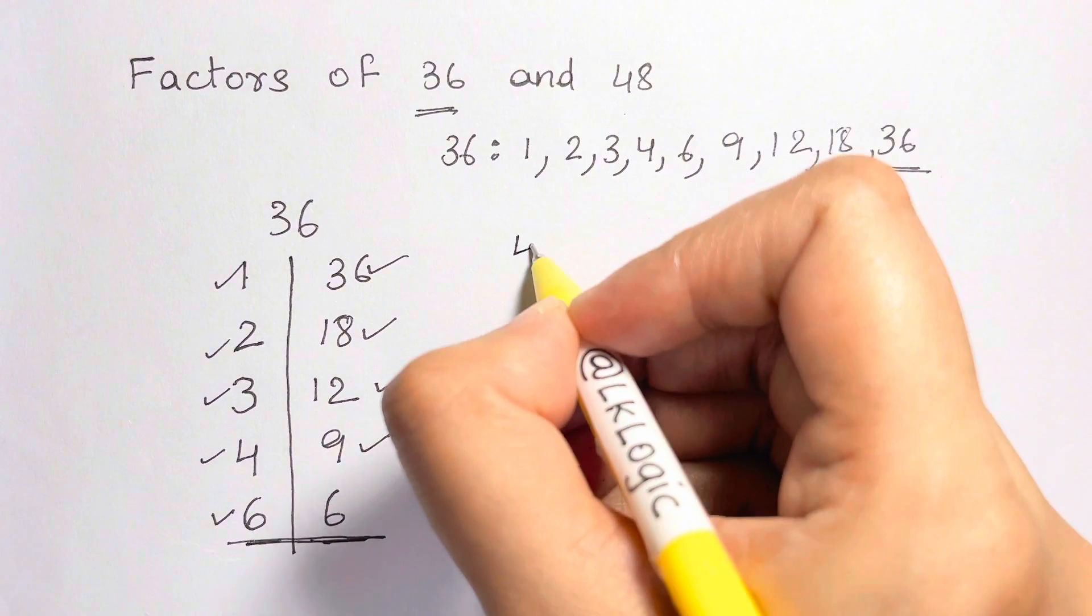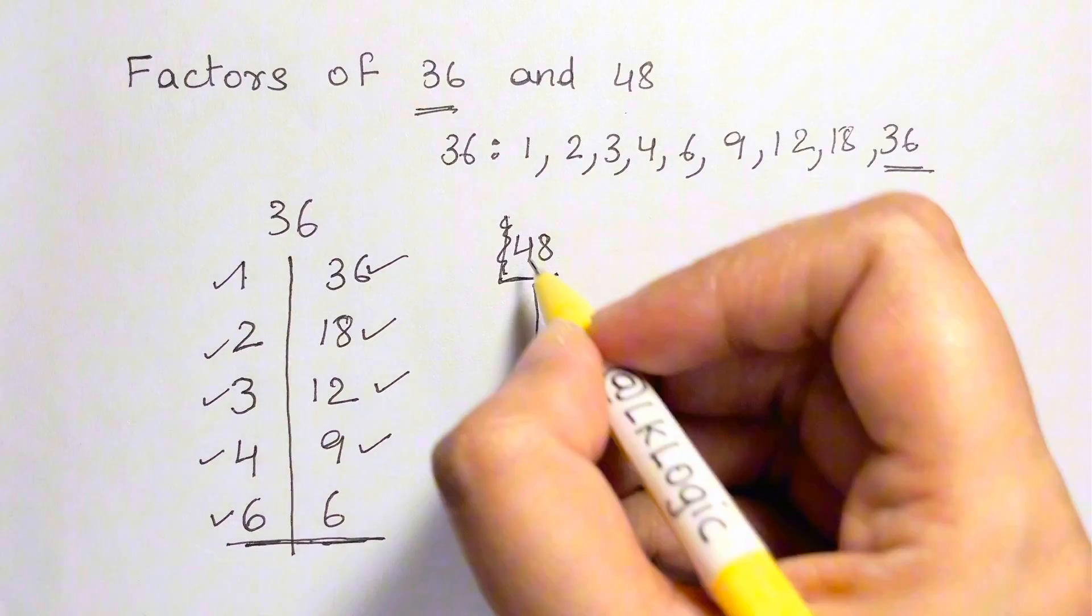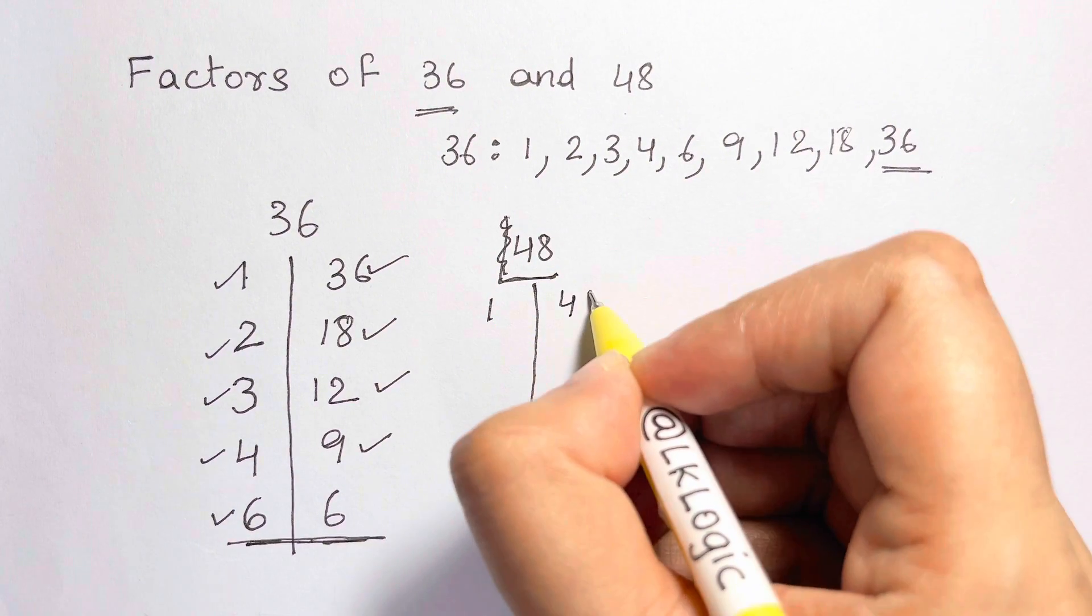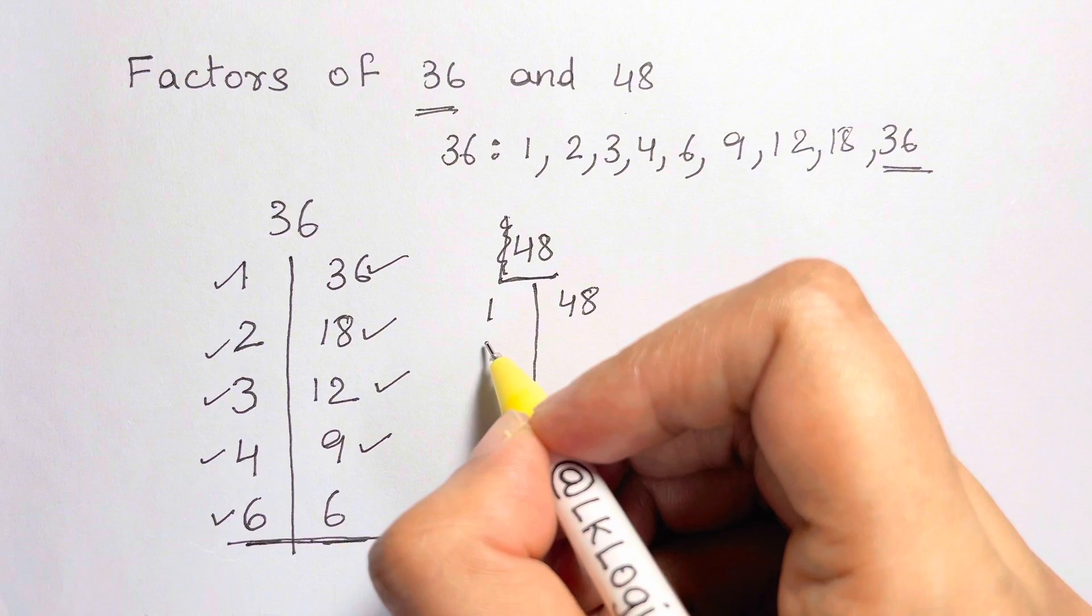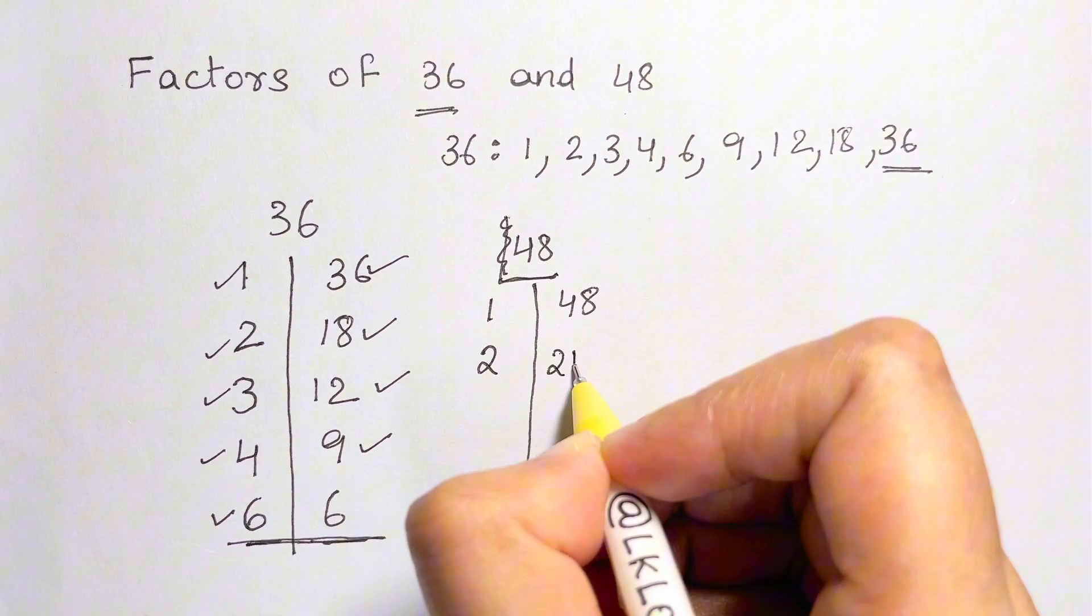Let's find out for 48. I'm going to draw a straight line and then start with 1. So, 1 times 48 is 48. Now, the next number after that, 2. 48 is divisible by 2. Yes, 2 times 24 is 48.